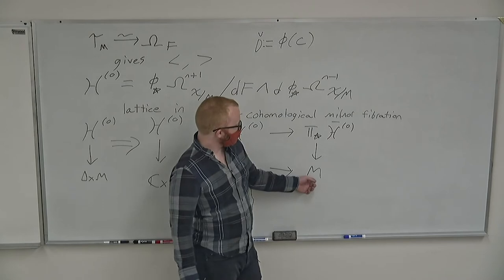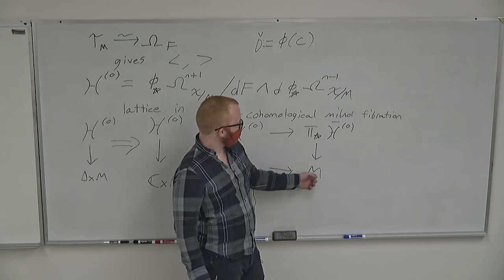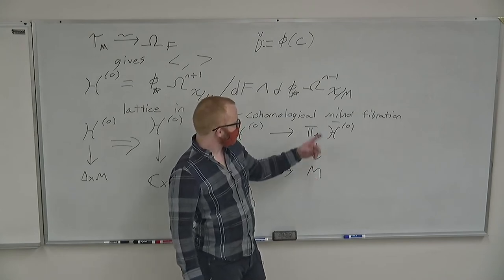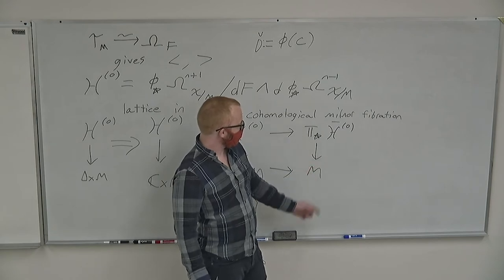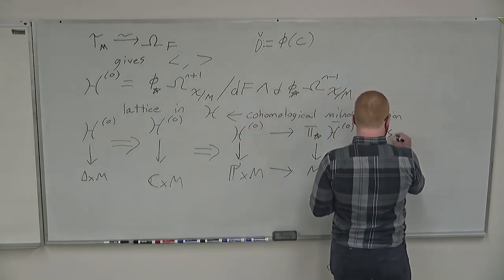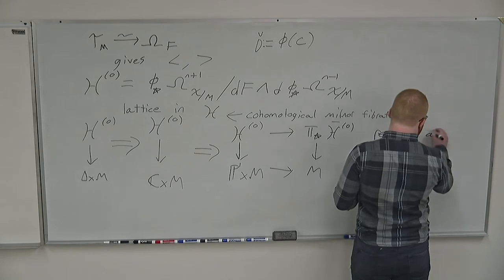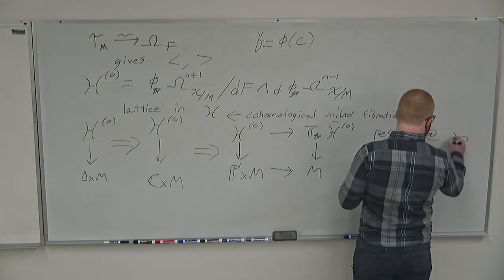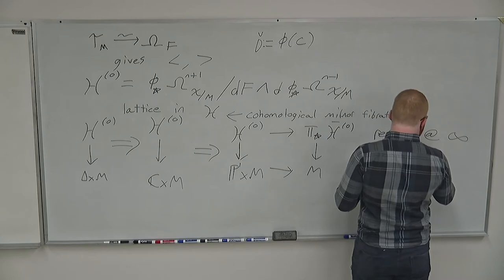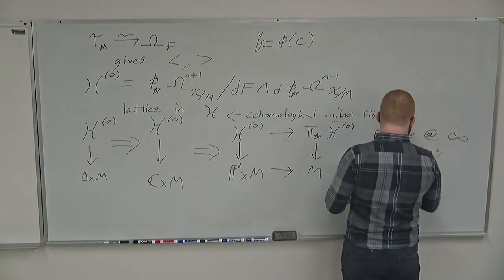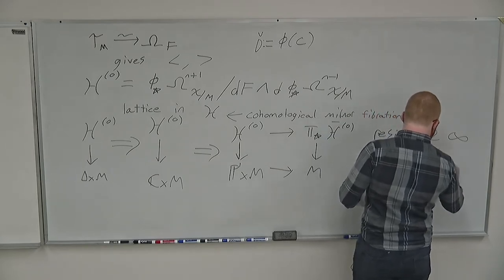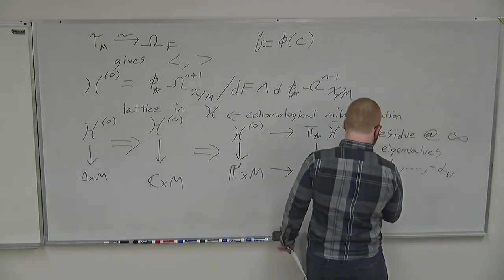You can find filtrations on the multi-valued sections of this, and those filtrations will give us extensions. After we do this, we can talk about the pushforward of this extended Brieskorn lattice to just M. Now we do have just an honest-to-God connection over M. And this extended Brieskorn lattice has residue at infinity with eigenvalues that are the negatives of the spectrum of the singularity.